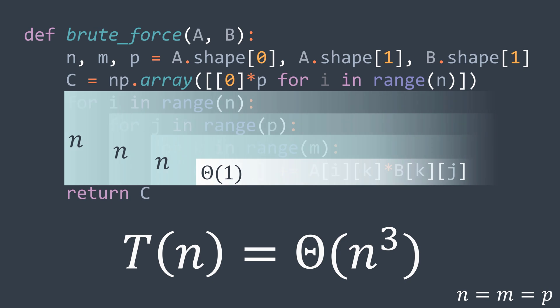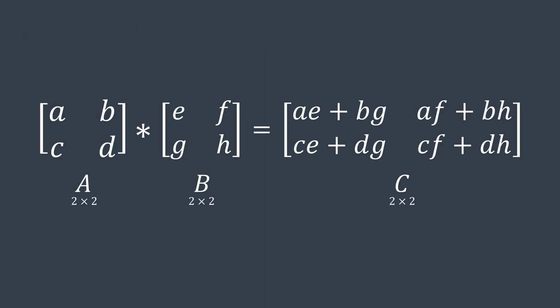Okay, let's multiply these two by two matrices. We have A, B, C, D in the first one and E, F, G, H in the second one. We get C11 equal to AE plus BG, C12 equal to AF plus BH, C21 equal to CE plus DG, and C22 equal to CF plus DH.